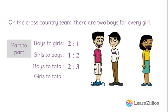Lastly, we can compare the number of girls to the total. We still have a total of three teammates, and one of those three teammates is a girl. This time, we have a ratio of one to three. These kinds of ratios are called part-to-whole ratios — they compare the quantity of part of the group to the quantity of the whole group.